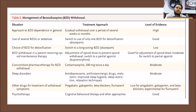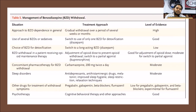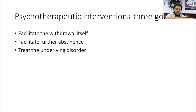Regarding levels of evidence: gradual tapering of benzodiazepines and switching protocols have high-level evidence. Using diazepam alone for detoxification also has good evidence. Carbamazepine and antidepressants have moderate evidence. Pregabalin and gabapentin have low-level evidence. Cognitive behavioral therapy as an add-on to benzodiazepine withdrawal has good supporting evidence.